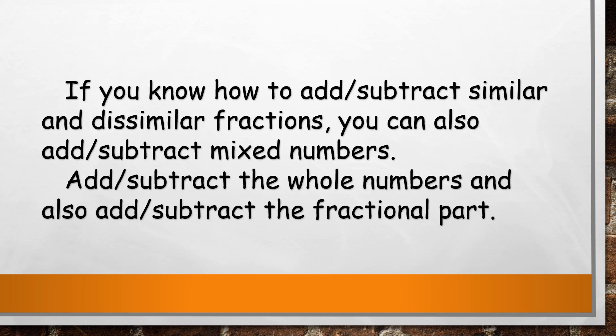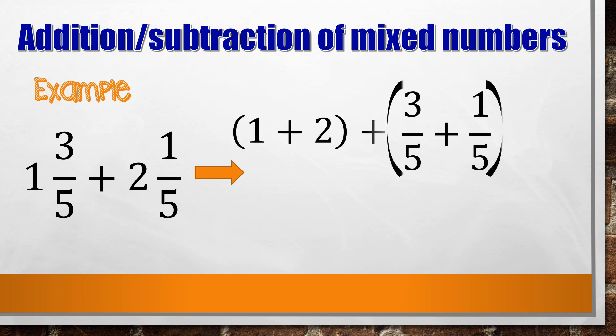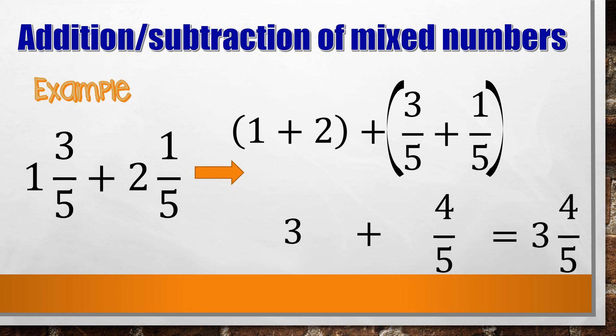If you know how to add or subtract similar and dissimilar fractions, you can also add or subtract mixed numbers. Add or subtract the whole numbers first, then add or subtract the fractional part. For example, 1 and 3/5 plus 2 and 1/5: add the whole numbers 1 and 2 to get 3, then add 3/5 plus 1/5 to get 4/5. The answer is 3 and 4/5.